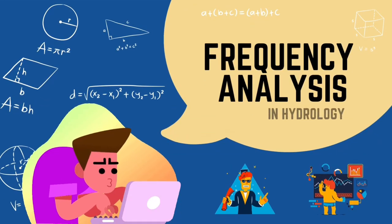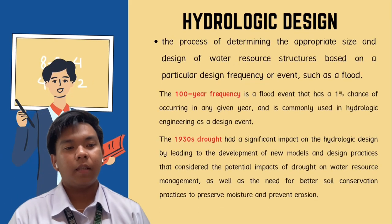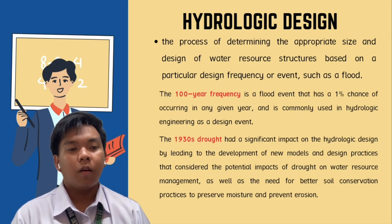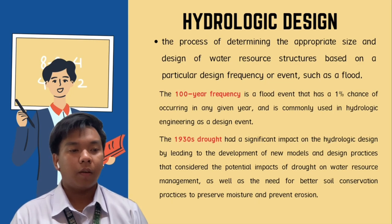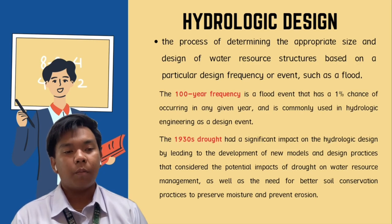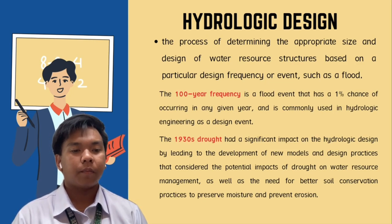Frequency analysis in hydrology. The first topic is hydrologic design, which is the process of determining the appropriate size and design of a water resource structure based on a particular design frequency or event such as floods. The first example is the 100-year frequency — a flood event that has a 1% chance of occurring in any given year, commonly used in hydrologic engineering as a design event.